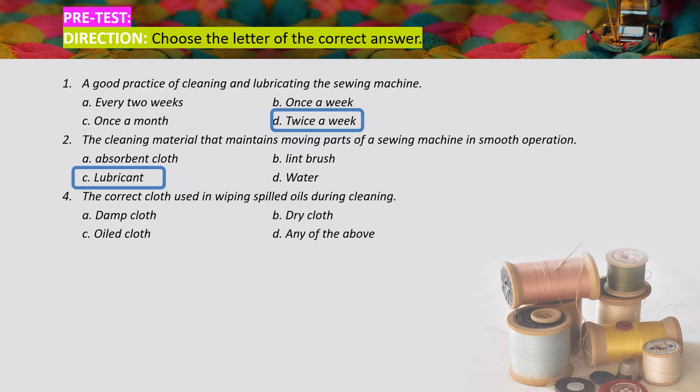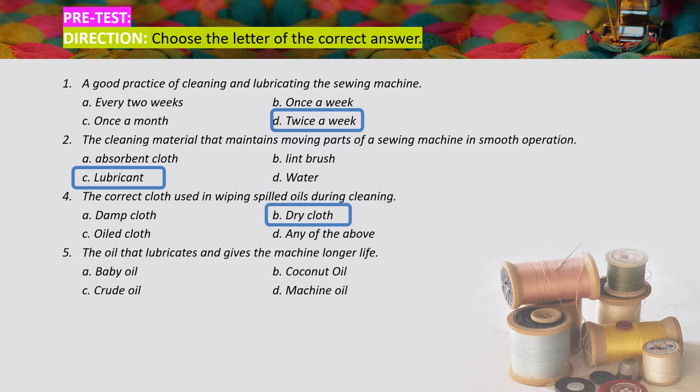The correct answer for number three is letter B, dry cloth. Number five: the oil that lubricates and gives the machine longer life is — A) baby oil, B) coconut oil, C) crude oil, D) machine oil. The correct answer in number five is letter D, machine oil.